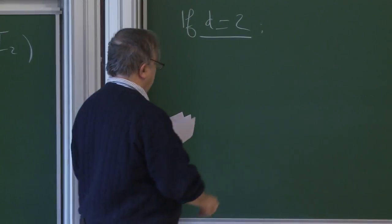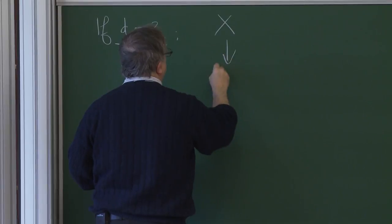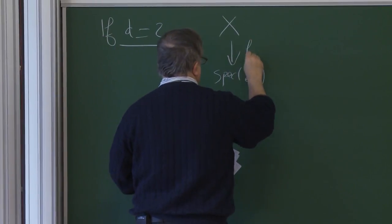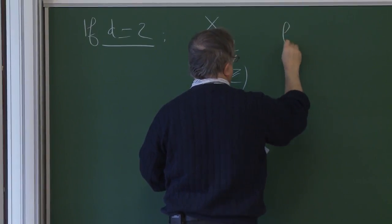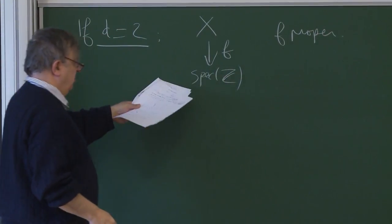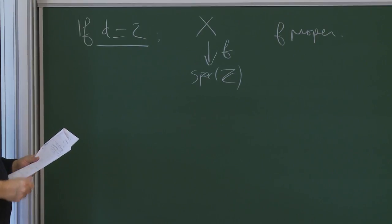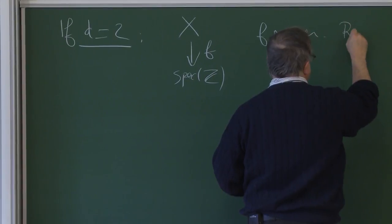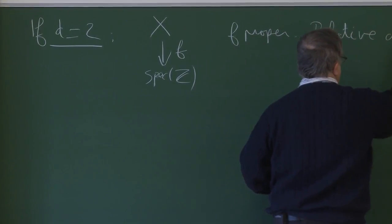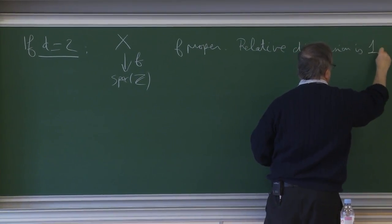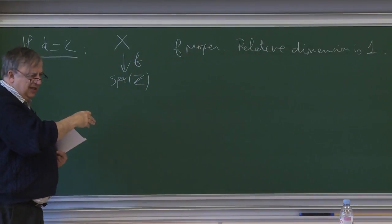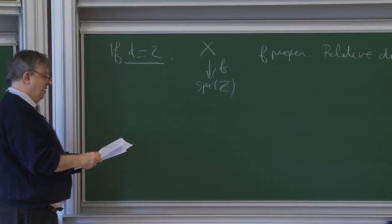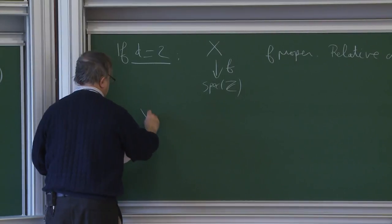Assume we have an arithmetic surface and let me assume that X is proper over Spec Z — a projective arithmetic variety, so it is flat and proper. We assume that the relative dimension is one, so the dimension of the fibers is one. The base Spec Z is dimension one, so the dimension of the scheme X is two. We say that X is an arithmetic surface.